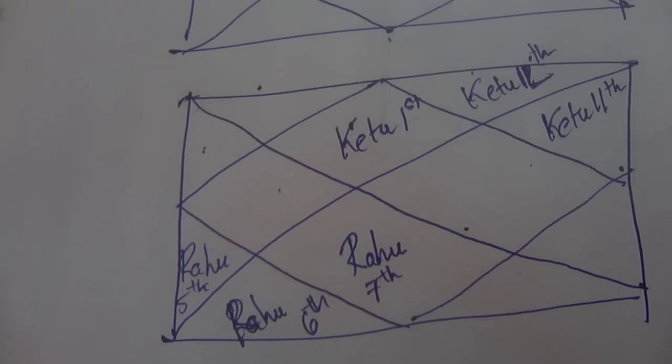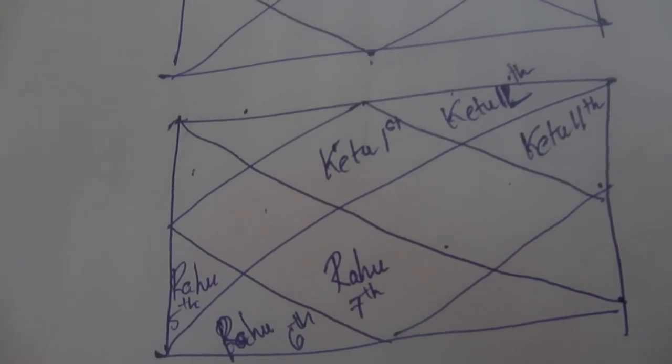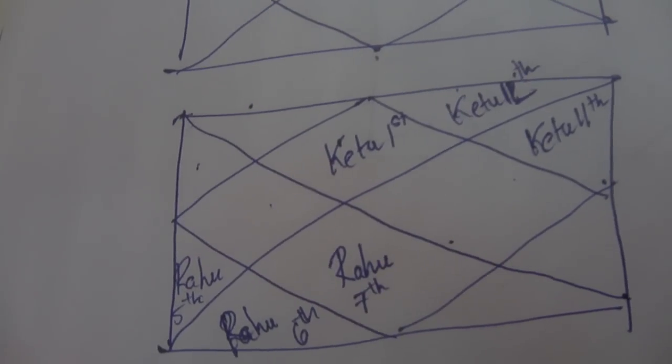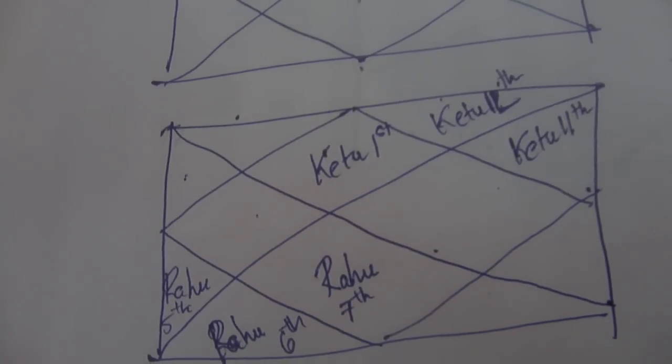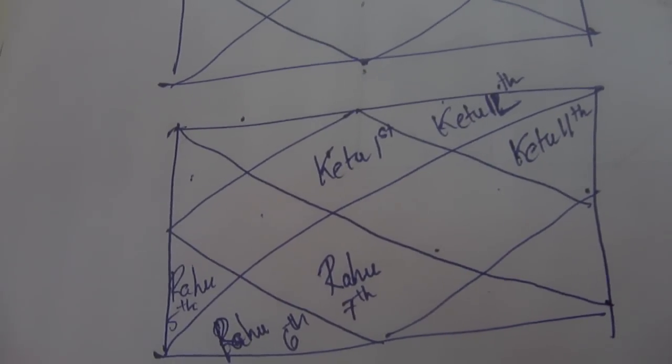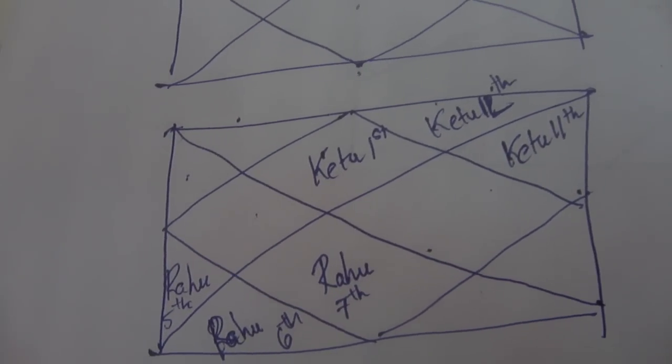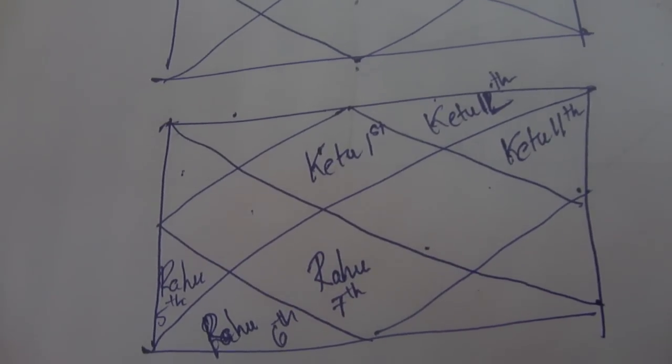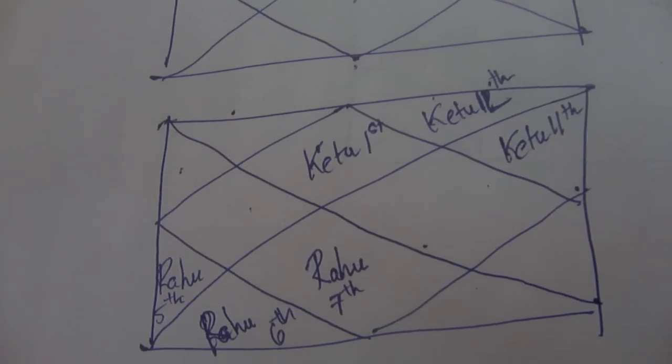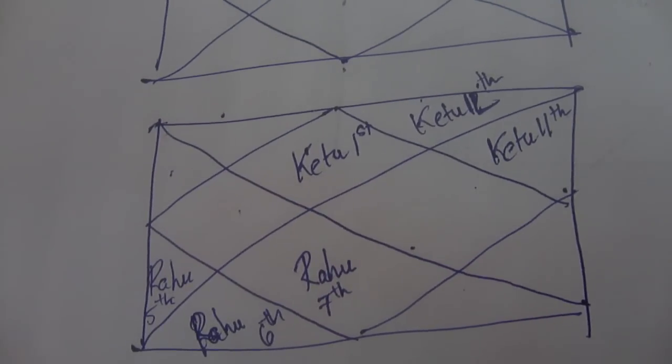Now basically Ketu in the 1st house or in the natural sign of Aries can mean that the person has a tendency to work alone, the person has a tendency to be something like Aries but Ketu is not really in very friendly terms with that kind of thing. So it can mean that you might isolate yourself, you might not like to work with others, you might not be very diplomatic as well.